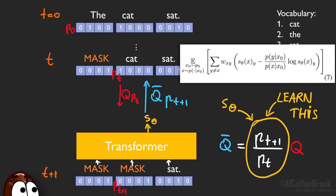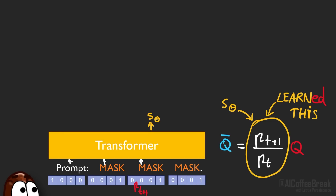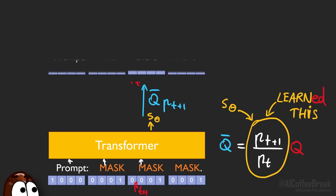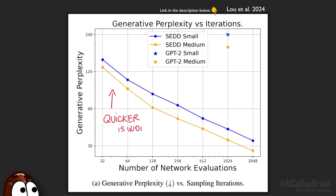Once the model has learned to predict the concrete score, we can use it to generate text during inference, starting from a sequence where all probabilities are uniformly noisy or masked. For the prompt tokens, the discrete diffusion model denoises the sequence token by token: picking a token, predicting the concrete score S, multiplying it to the forward diffusion matrix Q, then multiplying to the noisy probabilities in Pt+1 to get the probability of the predicted token. Doing this token after token produces the final sequence. To speed up generation, the authors could generate multiple tokens simultaneously, but this would impact results negatively.